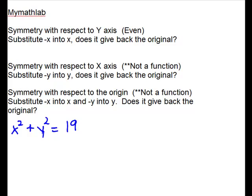In their questions when they ask, is there symmetry with respect to the origin? Again, we're working with something that is not in function notation. It is not a function. You could not isolate y and not have two answers. You would have y equals plus or minus on this. But to work this question in MyMathLab, you will substitute negative x into x and negative y into y. And does it give back the original?